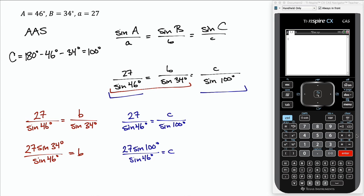Now we can go ahead and plug these into the calculator. Check that I'm in degree mode and then I start plugging in. So I've got 27 times sine of 34 over sine of 46, and that's going to be about 21 for b.